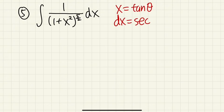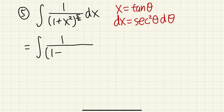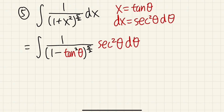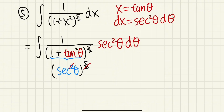With x = tan(θ), dx = sec²(θ) dθ. In the theta world, 1 + tan²(θ) = sec²(θ), and raising that to the 5/2 power gives sec⁵(θ) on the bottom — since the square root and square cancel, leaving the 5th power. The integral becomes 1 over sec⁵(θ) times sec²(θ) dθ. Canceling two secants leaves 1 over sec³(θ).